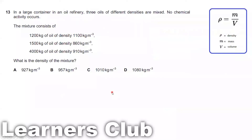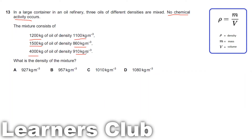Question 13. In a large container in an oil refinery, three oils of different densities are mixed. No chemical activity occurs, so there is no increase or decrease in mass. The mass and density of each of the three oils are given, and we need to find the density of the mixture.